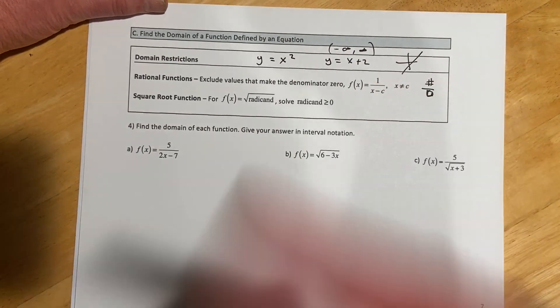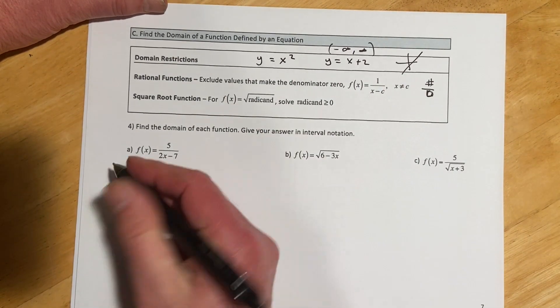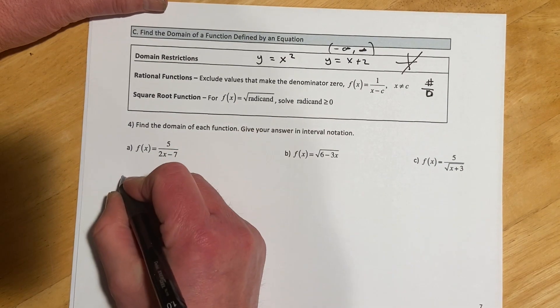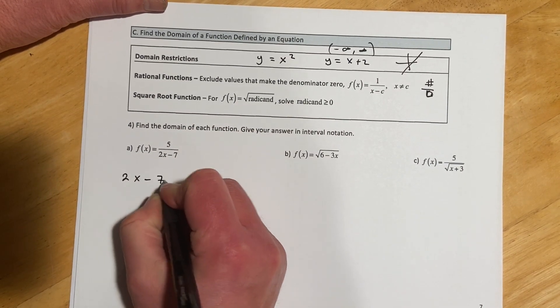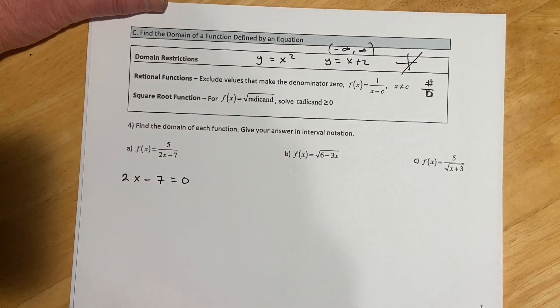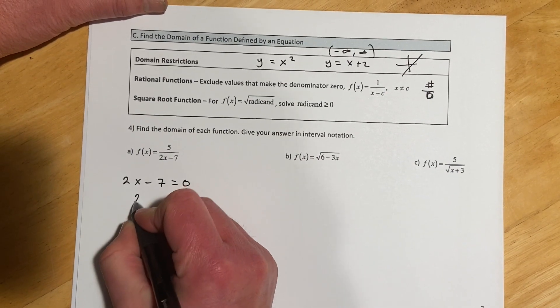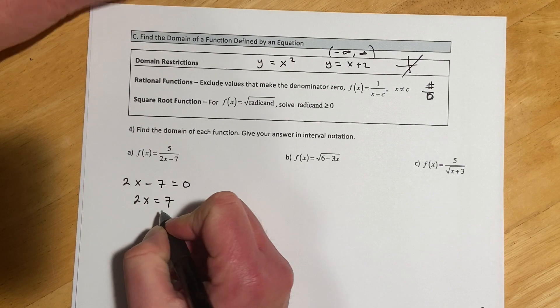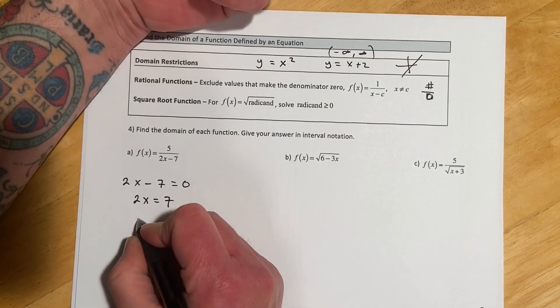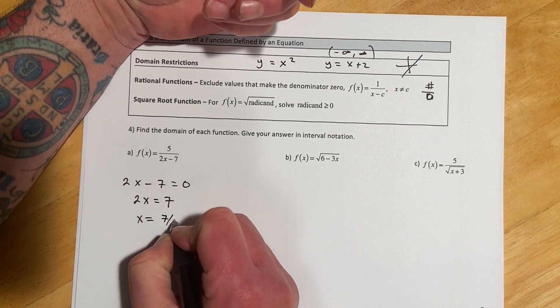So to do that, we just set the denominator to zero, and solve, and figure out what would mess it up. So 2x minus 7 equals zero. Add my 7 over. 2x equals 7, and then dividing, I get x equals 7 halves.